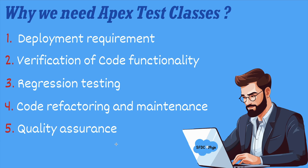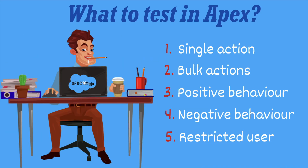After understanding the need for a test class, we should understand what to test in Apex. Salesforce recommends writing tests for these points. First is single action — you should write tests to verify that a single record produces the expected result. For example, if you have a button that sends an email, test that clicking it sends the email to one individual. Next is bulk actions — testing that your Apex code works correctly when dealing with multiple records, such as sending emails for many records at once.